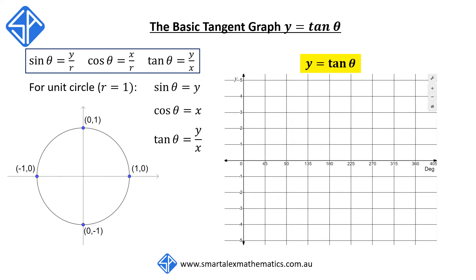For y equals tan theta, we look at the ratio of the y coordinate divided by the x coordinate. At theta equal to zero degrees, y divided by x is 0 divided by 1, which equals zero — that's this point on the graph. When theta equals 90 degrees, y divided by x is 1 divided by 0, which is undefined, so the function has a vertical asymptote at 90 degrees. If theta is slightly less than 90 degrees, we're in quadrant 1 where x and y are both positive, so 1 divided by a very small number approaches positive infinity.